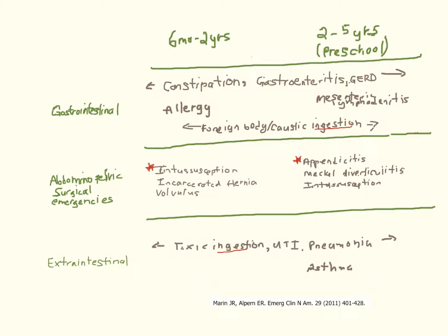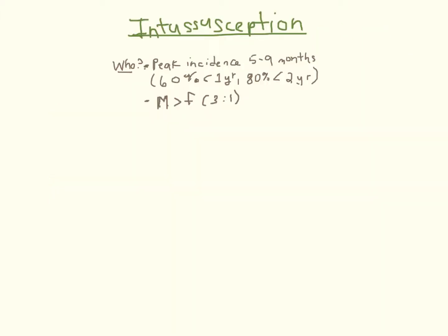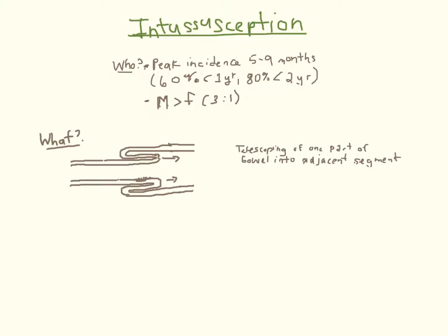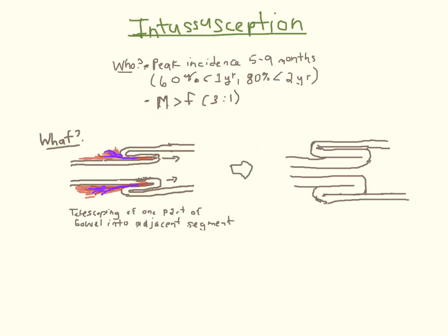Intussusception is the most common cause of small bowel obstruction between 3 months and 6 years of age, with most cases occurring before the age of 2. In intussusception, one part of the bowel telescopes into an adjacent segment, dragging its mesentery between the two and blocking venous return. The telescoped segment becomes progressively engorged with risk for obstruction, strangulation, ischemia, and perforation.